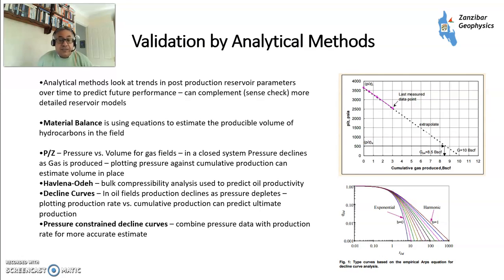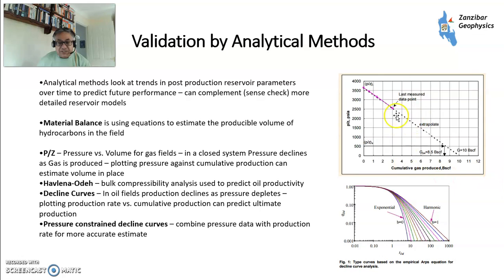Validation by analytical methods requires production data. For example, material balance uses equations to determine the produced volume of hydrocarbons in the field — that's what people used to do before simulation, and it's still a valid tool that gives you validation that your model is somewhere near correct. P over Z — pressure over Z — relates to gas volume: as pressure declines and gas is produced, you plot the two together and from that you can get an estimate of what's going on. Decline curves are also used quite a lot, particularly in shale. Basically, it's a way of trying to constrain your model and check that it actually works.